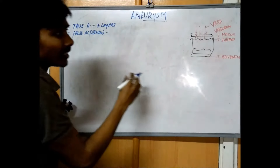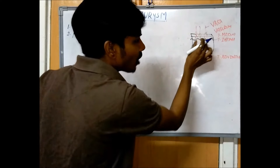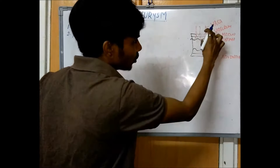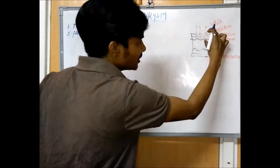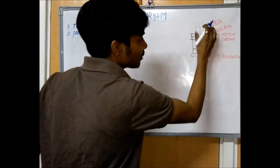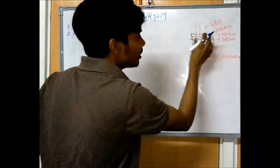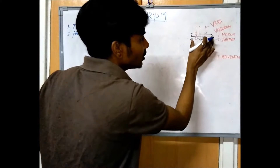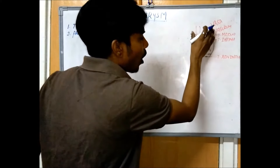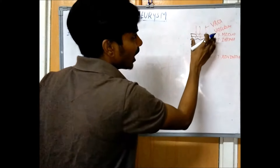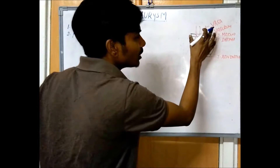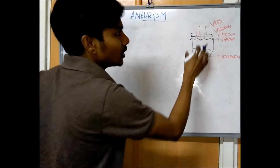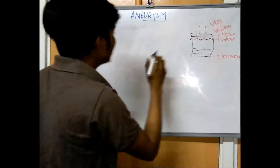In a false aneurysm or pseudoaneurysm, there is a trauma to the tunica intima or to all three layers, causing rupture of these three layers. The blood from the arteries goes out from the artery and forms a blood clot or thrombus formation surrounded by tissue.